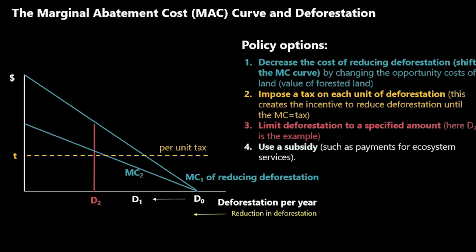Finally, we could use a subsidy, such as payments for ecosystem services. Subsidies create payments to landholders for each unit of deforestation that's reduced. So instead of paying a tax, they would receive a subsidy for each unit reduced. The landowner would reduce deforestation as long as the subsidy payment was greater than the cost of reducing deforestation, and the analysis ends up with a result identical to a tax. The only difference is that the government, instead of receiving tax revenue, would have to pay farmers for this policy.